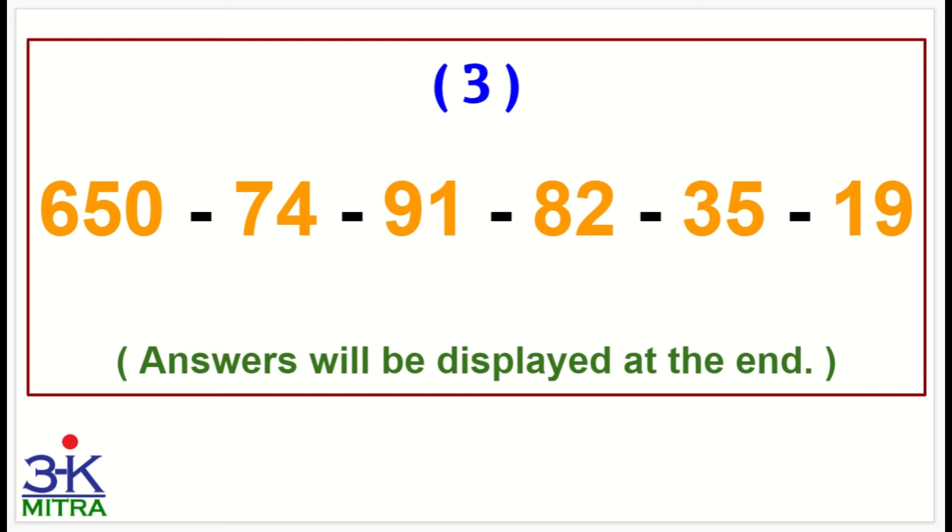Let's move to the fourth sum now. 650 again, minus 28, minus 57, minus 34, minus 66, minus 82. That is, write down the answer.